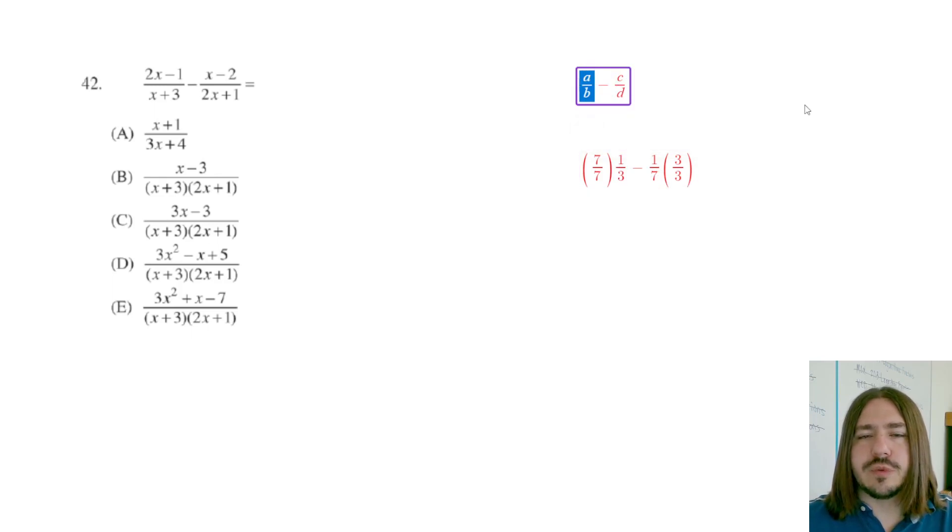So in general, that's what we want to do here. We want to multiply the first fraction by the second fraction's denominator over itself. So in this case, it'd be like d over d. Same thing goes with the second fraction. We're going to multiply that by the denominator b over b.